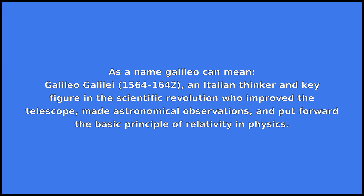As a name, Galileo can mean Galileo Galilei, 1564 to 1642, an Italian thinker and key figure in the scientific revolution who improved the telescope, made astronomical observations, and put forward the basic principle of relativity in physics.